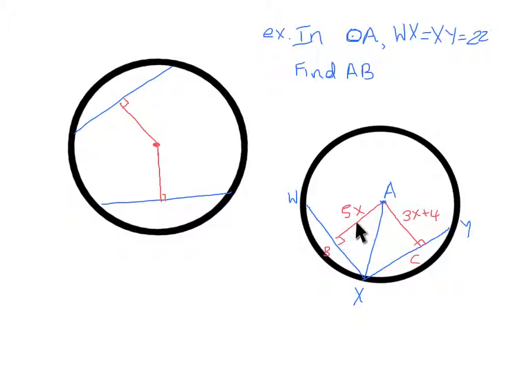The red line here represents the perpendicular length from the center to that chord. So we know that it's 5X away from the center. And same here. AC is the distance away from the center of this chord. Which means that since we know the distance has to be the same, that means 5X and 3X plus 4 is equal to each other. So let's write that down.